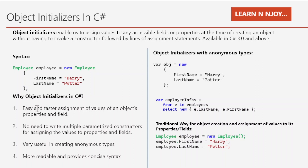Now let's discuss why object initializers in C# are needed. Number one: easy and faster assignment of values to an object's properties and fields. Number two: no need to write multiple parameterized constructors for assigning values to properties and fields. If we want to initialize different sets of properties, we usually write multiple parameterized constructors with different combinations of input parameters.